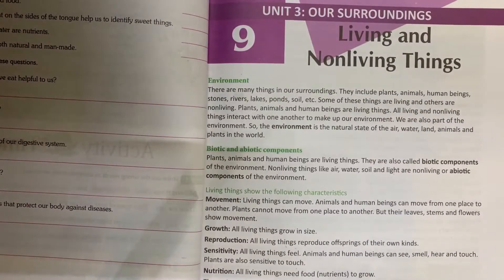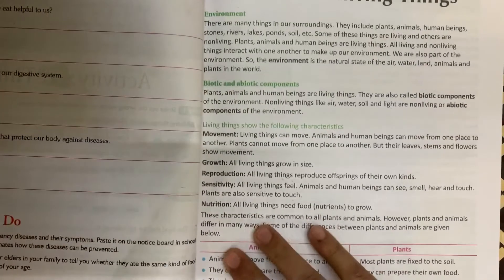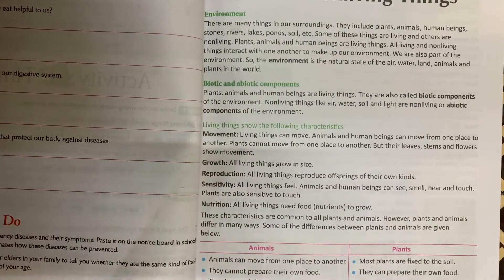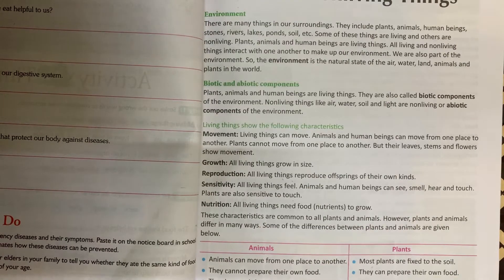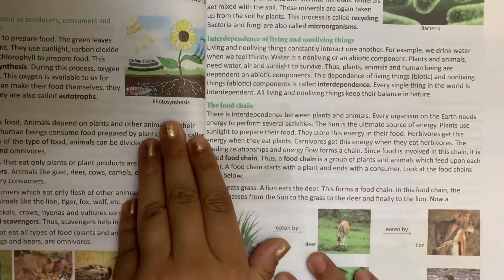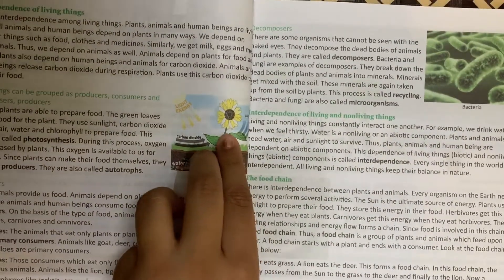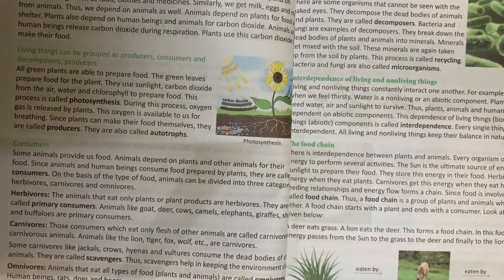We have read that living things are known as biotic components, and non-living things are known as abiotic components. Then we studied about some of the characteristics of living things: like they can move, they can grow, they reproduce, they are sensitive, and they need food.